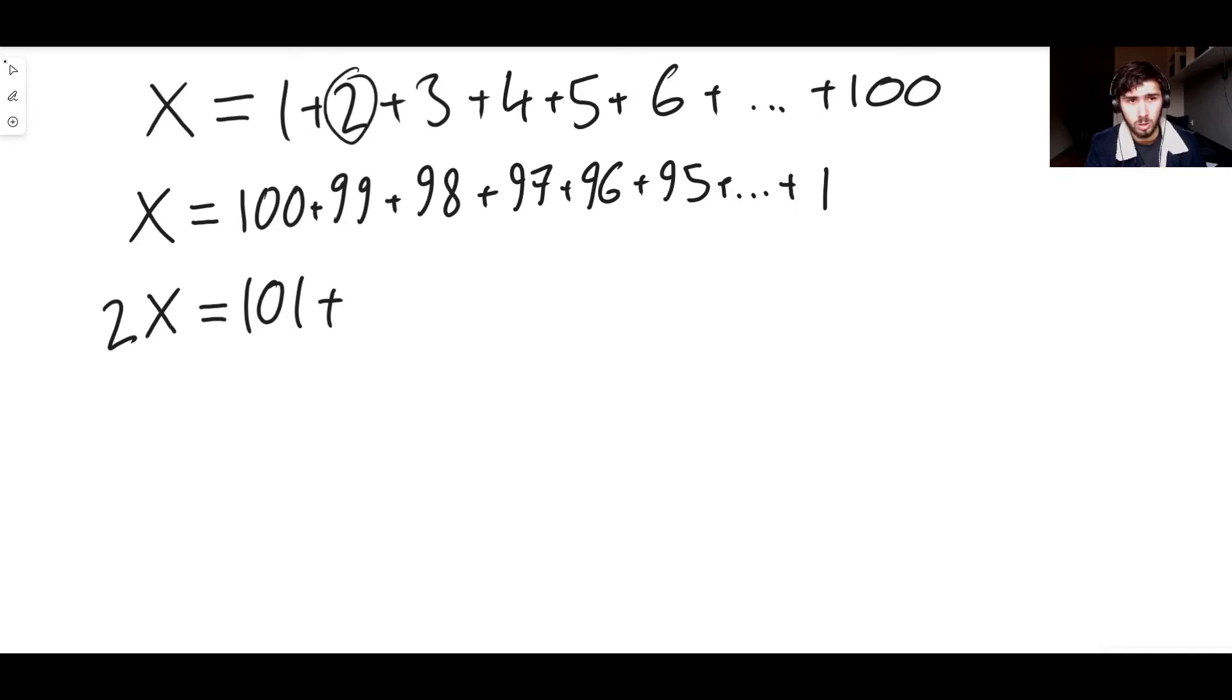Watch what happens on this right-hand side. The first calculation we're going to do is 1 plus 100. Well, that's not too bad, that's just 101. So it's 101 plus the second thing, we're going to add 2 to 99. Well, what's 2 plus 99? Oh, it's 101.